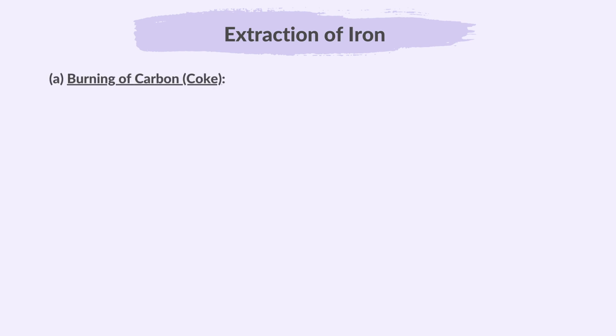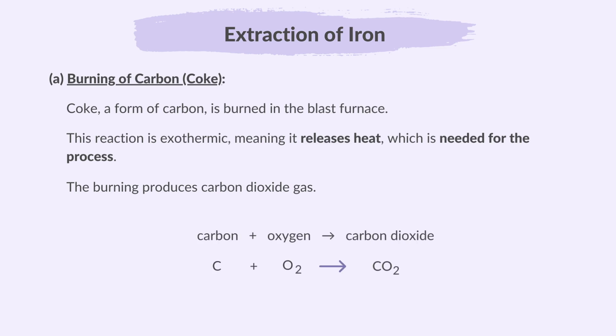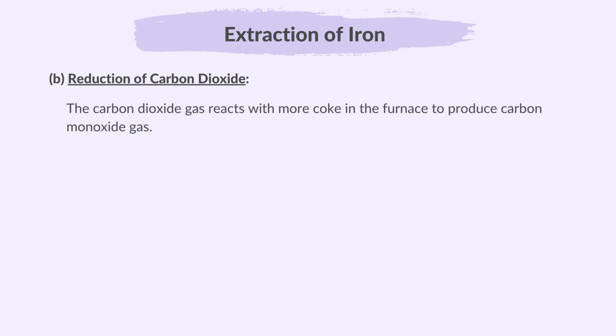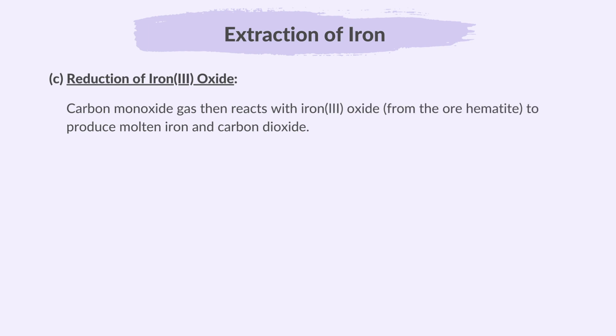First, the burning of carbon. Coke, a form of carbon, is burned in the blast furnace. This reaction is exothermic, meaning it releases heat, which is needed for the process. The burning produces carbon dioxide gas. Next, the carbon dioxide gas reacts with more coke in the furnace to produce carbon monoxide gas. Carbon dioxide has been converted into carbon monoxide through reduction. Carbon monoxide gas then reacts with iron 3 oxide from the ore hematite to produce molten iron and carbon dioxide. This is the primary reaction where iron is extracted from its ore.